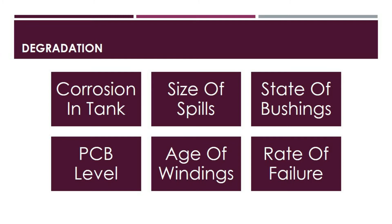When calculating the health index for distribution transformers, the following elements should be taken into account: the corrosion in the tank and the state of the paint of the tank, the size of the oil spills, the state of the bushings, the PCB level of the transformer, operational age and temperature profile of the windings, and the rate of failure.